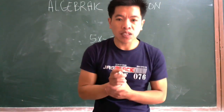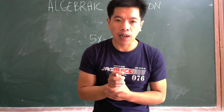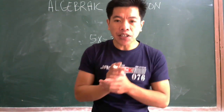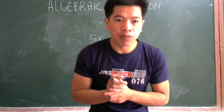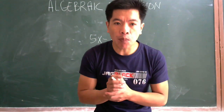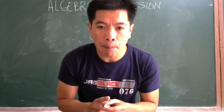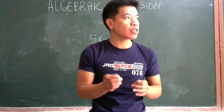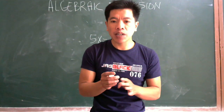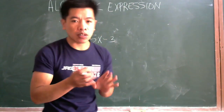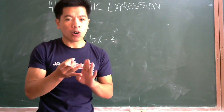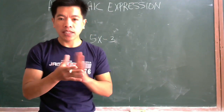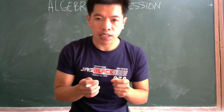So what is a variable? A variable is any letter or symbol that represents a number. For example, a variable is a letter such as A, B, X, Y, or Z. They are variables.